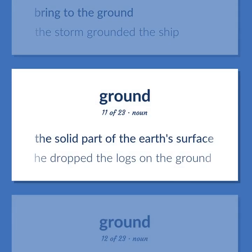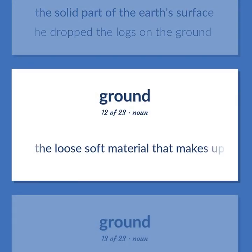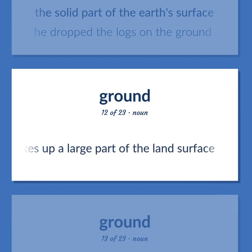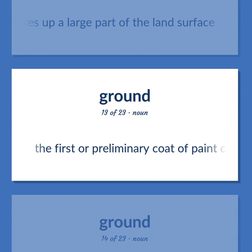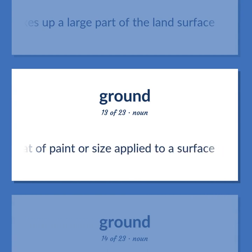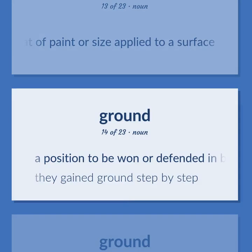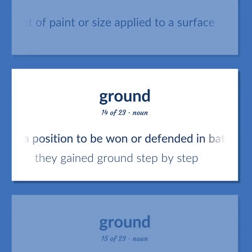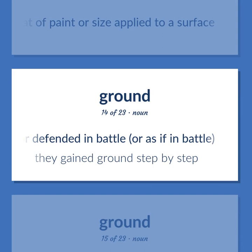The solid part of the earth's surface — 'He dropped the logs on the ground.' The loose soft material that makes up a large part of the land surface. The first or preliminary coat of paint or size applied to a surface. A position to be won or defended in battle — 'They gained ground step by step.'